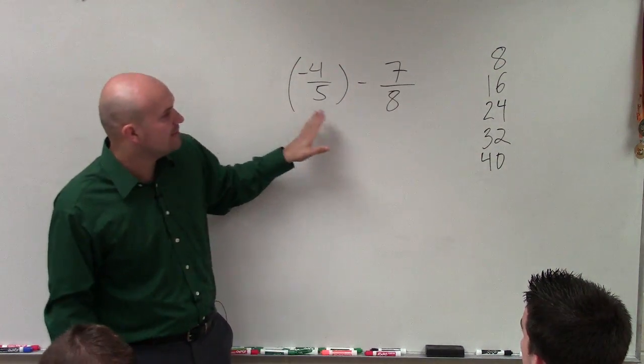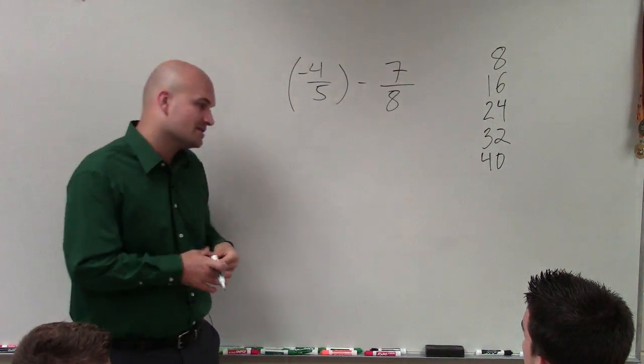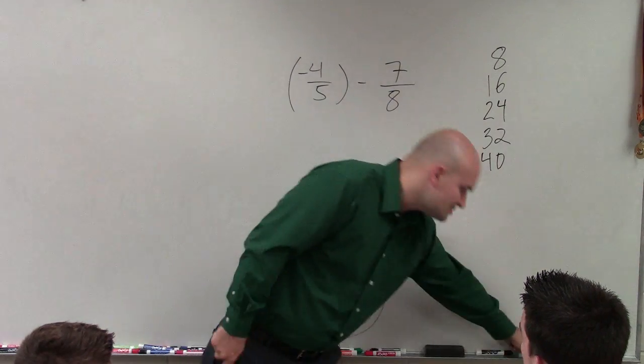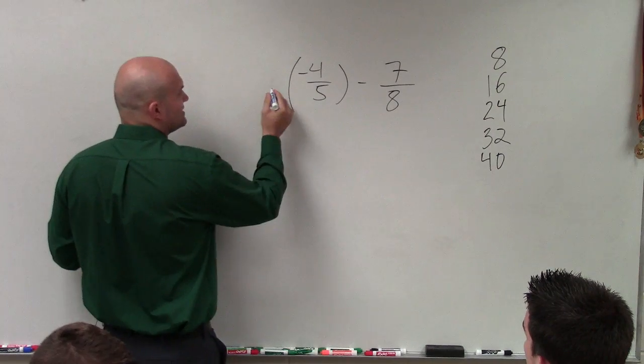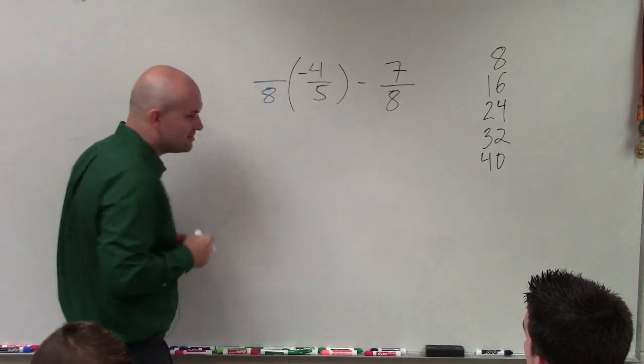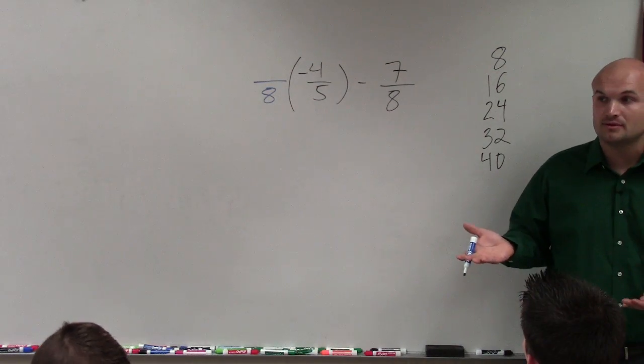So what I need to do is determine what multiplier do I need to multiply by 8 and 5 to get to 40? Well, it's going to be different for each fraction. So to get 5 to multiply by 40, I need to multiply by 8. But we don't want to change the problem. If you just multiply the denominator by a number, you're going to change the fraction, right?